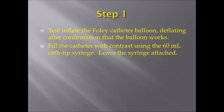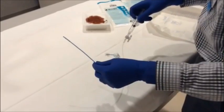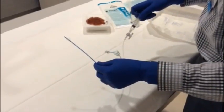Step 1: Test inflate the Foley balloon. Then, using a 60 mL catheter tip syringe, fill the catheter with contrast and leave the syringe attached.